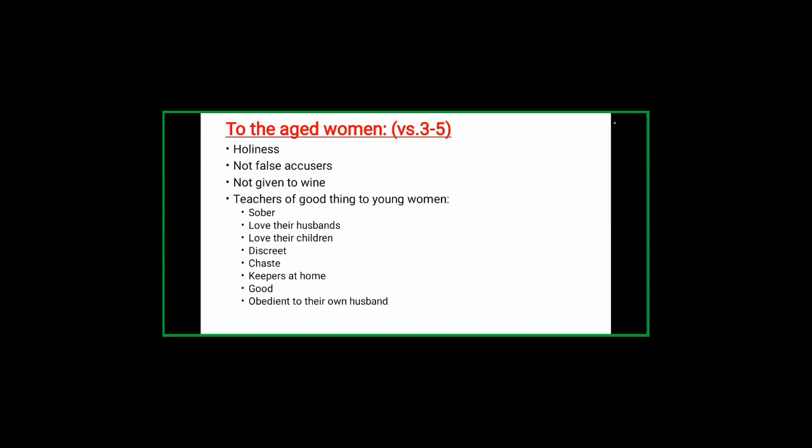For aged women, verses three to five outline the required qualities. They are supposed to be holy, not false accusers — meaning not bearing false witness — and not given to wine. The reason aged women need these qualities is so that they can teach the younger women. What are they supposed to teach the younger women? Verse five says: they are to teach young women to be sober and, if married, to love their husbands and love their children.